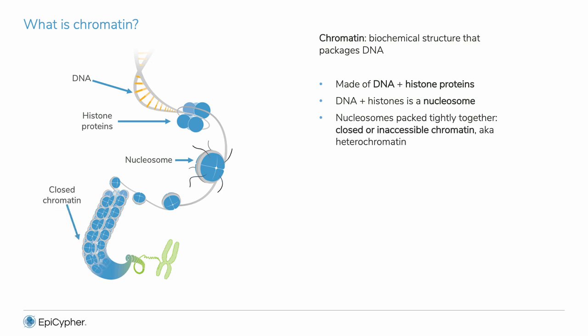Nucleosomes can be packaged very tightly together, enabling more DNA to be stored in a smaller space. This is called closed or inaccessible chromatin, or heterochromatin. Nucleosomes can also be farther apart on DNA, which is called open or accessible chromatin, or euchromatin.